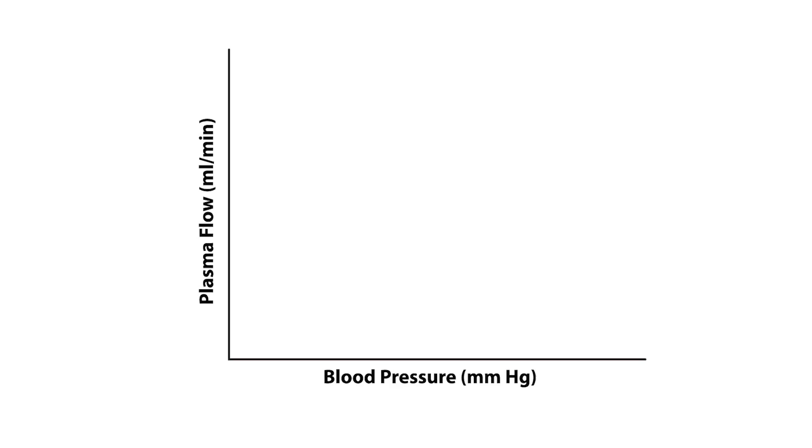Let's use this graph to describe the myogenic reflex, where we plot plasma flow as a function of blood pressure. Now, without the myogenic reflex, plasma flow would exponentially increase as a function of blood pressure, as shown here by the red line.